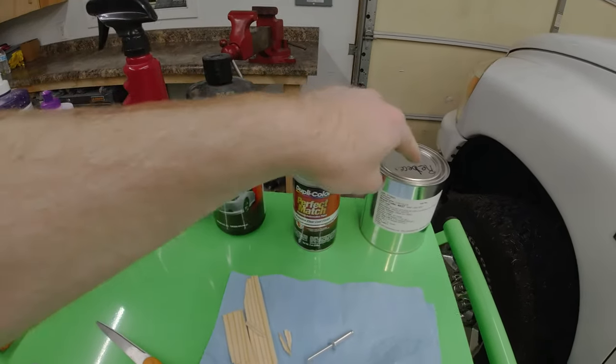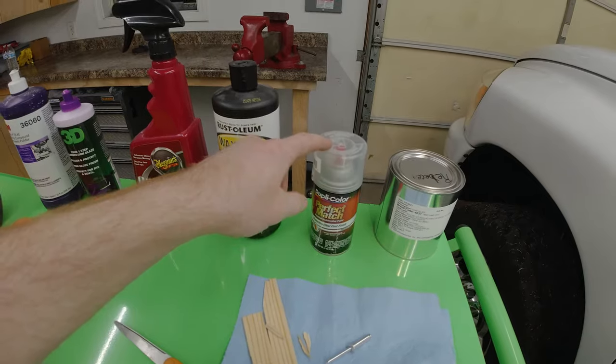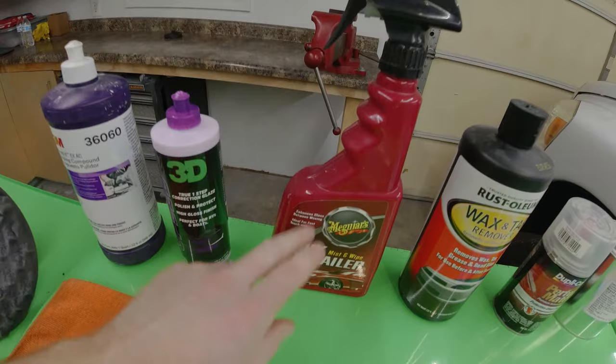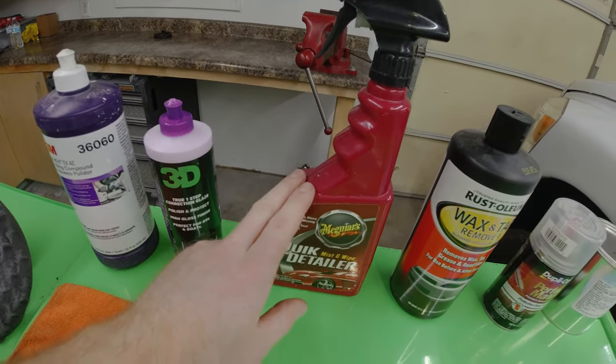Then you're gonna need some clear coat. A lot of paint pens come with clear coat on the other side of the applicator. We've got wax and grease remover. This is just water in the spray bottle. Don't use any kind of detailer because that'll mess up your job.